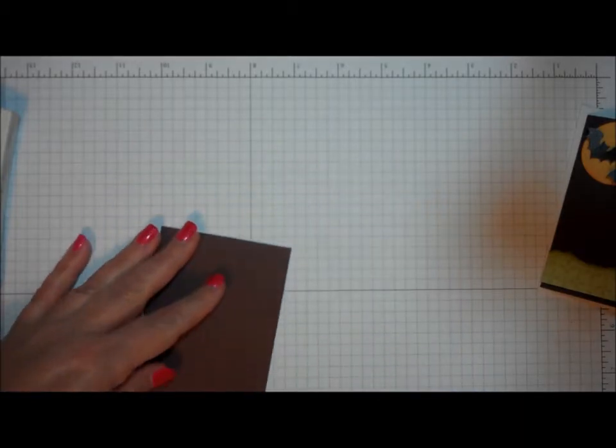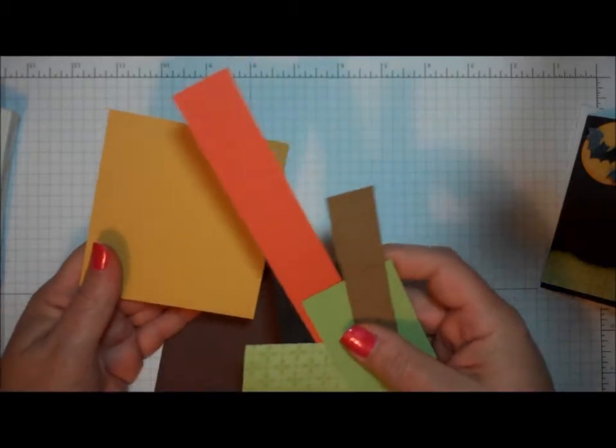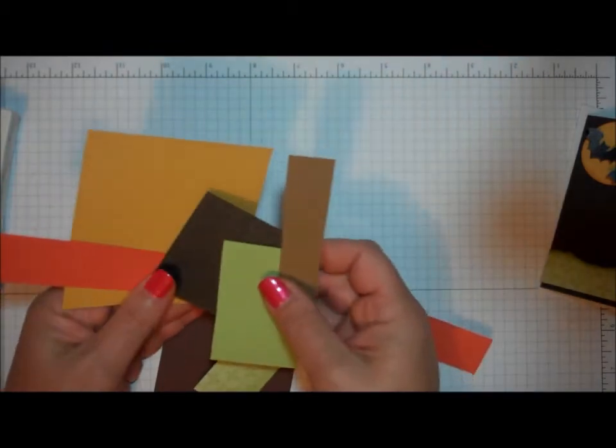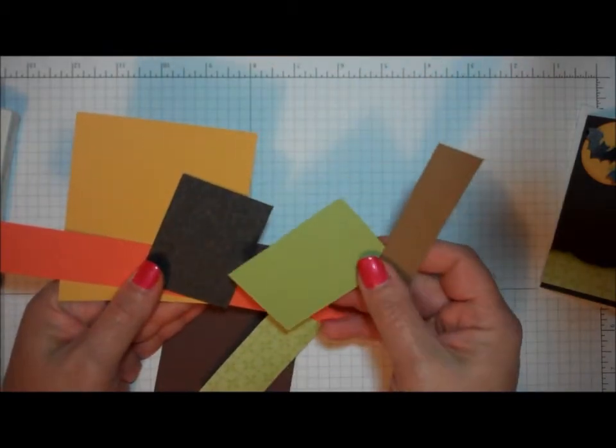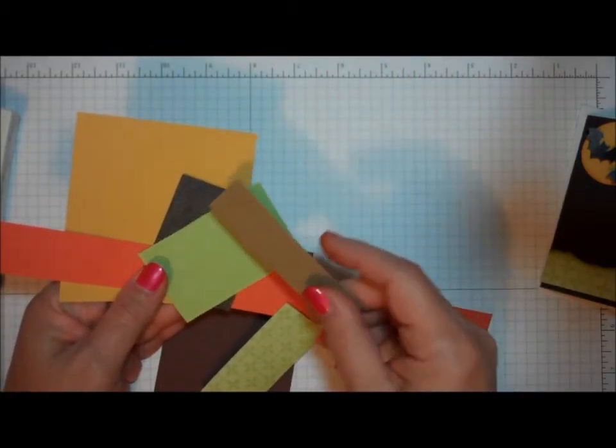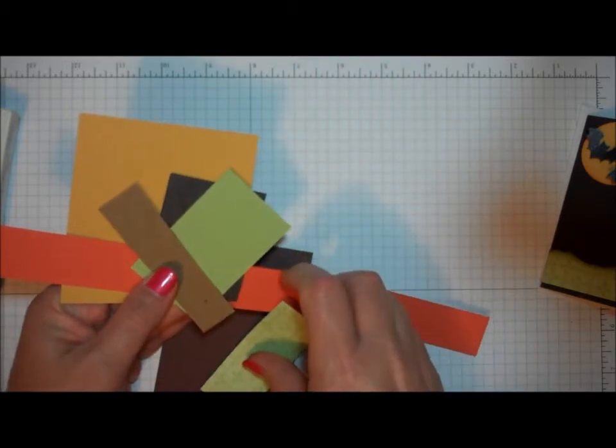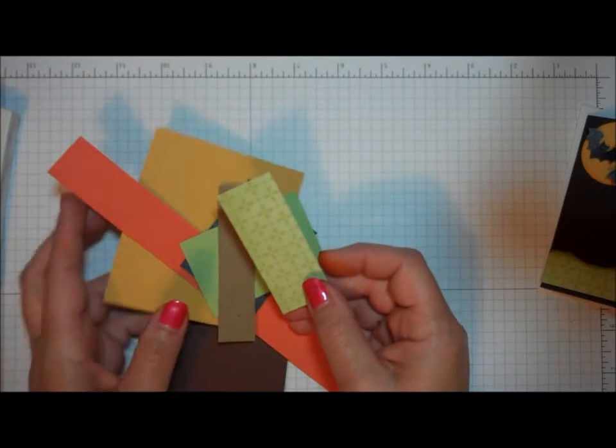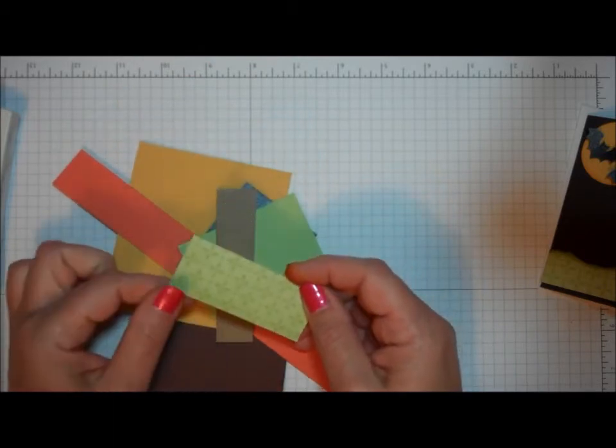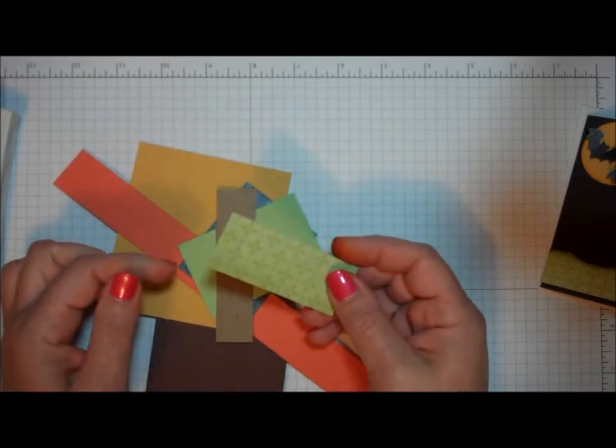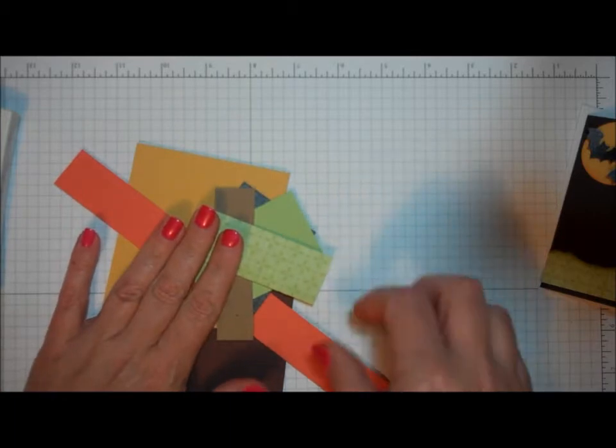And then I got scraps of a yellow, an orange. I happen to have an iridescent black but a flat black would also work. A little piece of green. This is actually a piece of chipboard that I just cut off of a scrap that I was going to throw away. And I used a green on green print. But a polka dot or any kind of a print would work great for this. And these are all just really tiny pieces.